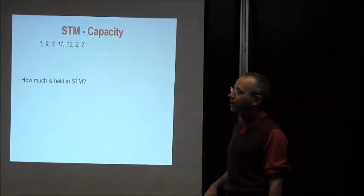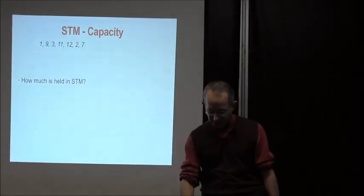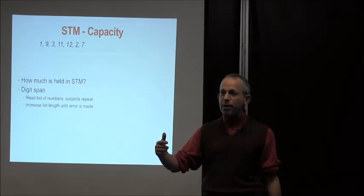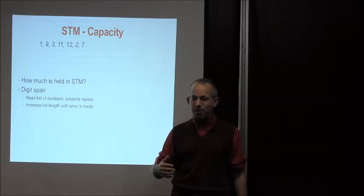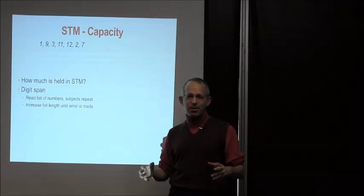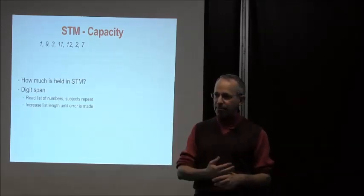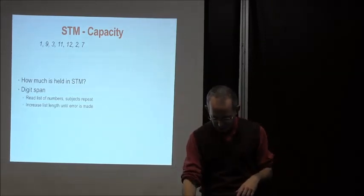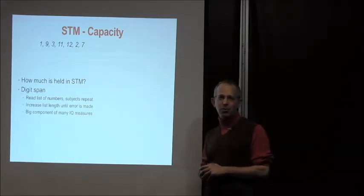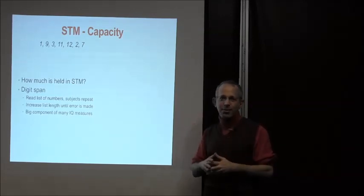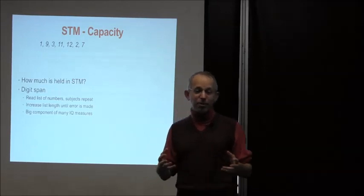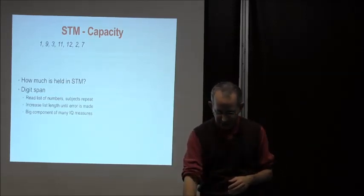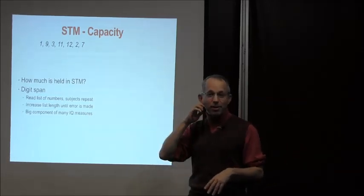How much information can we hold in short-term memory? The digit span task — where you repeat back a sequence of digits — shows that once you get to about five to seven items, people start to fall apart. This is a big component of many IQ measures. A large predictor of intelligence is just how much you can keep in your head at one time — how many idea balls you can keep up in the air at once. George Miller had a famous paper called 'The Magic Number 7 Plus or Minus 2,' showing that seven is roughly the median of how much we can store — which is why phone numbers tend to be seven digits.